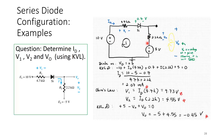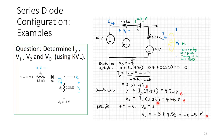Once ID is known, applying Ohm's law: V1 equals ID times 4.7K equals 9.735 volts, and V2 equals ID times 2.2K equals 4.55 volts.